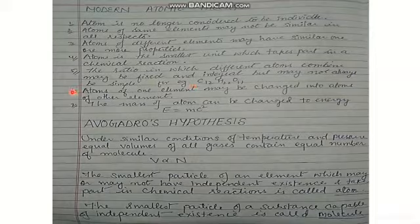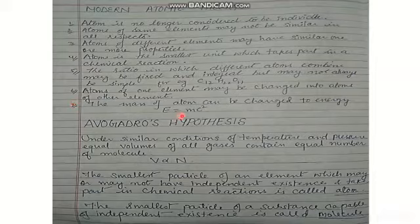Atoms of one element may be changed into atoms of another element. The mass of atoms can be converted to energy by the formula E = mc², where m is the mass of the atom and c is the velocity of light. In this way, we can convert the mass of an atom to energy.